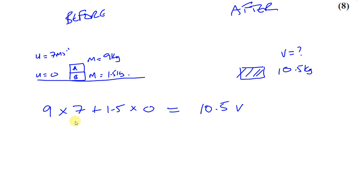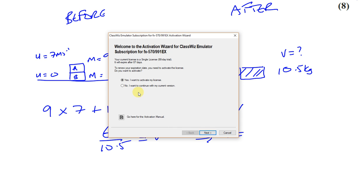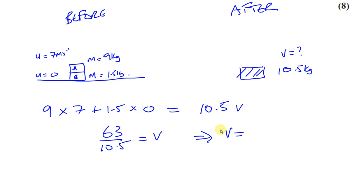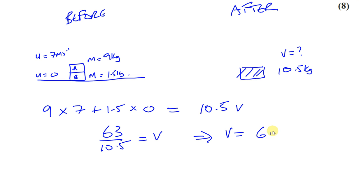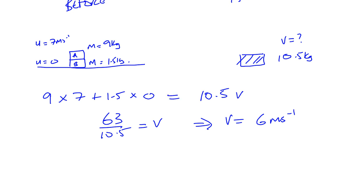So basically you end up with that's 0, that's 63 divided by 10.5 will give you the speed after the collision, which is going to be 63 divided by 10.5. That gives you 6. So 6 meters per second is the speed at which these blocks start going into the ground.